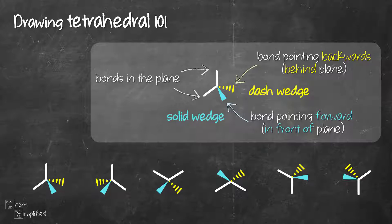However, you can also show tetrahedral in a different orientation like this. This is like having two bonds pointing towards us, and then two bonds pointing away from us.